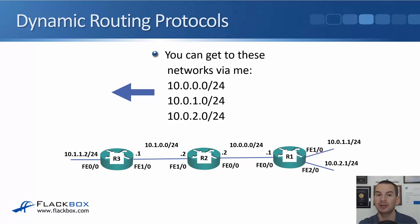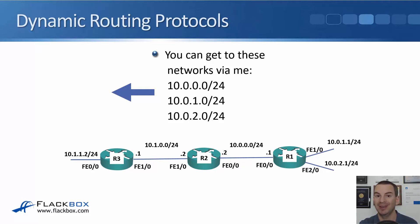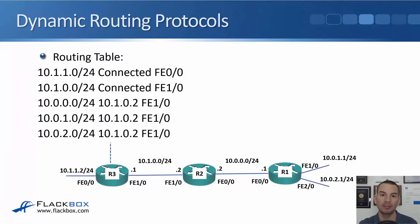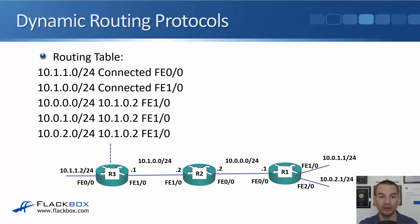R2 also has a relationship with R3, so it will advertise information there as well. R2 tells R3 that it can reach 10.0.0.0/24, 10.0.1.0/24, and 10.0.2.0/24 via R2 — R2 advertises not just its directly connected routes but also the routes it learned from R1. R3 can now update its routing table. It has directly connected routes to 10.1.1.0/24 and 10.1.0.0/24 on FastEthernet 0/0 and 1/0, and the routes it learned — 10.0.0.0/24, 10.0.1.0/24, and 10.0.2.0/24 — are all reachable out FastEthernet 1/0 with a next hop of R2 at 10.1.0.2.